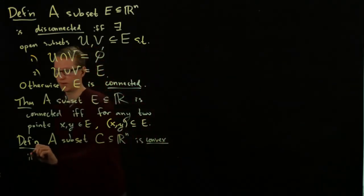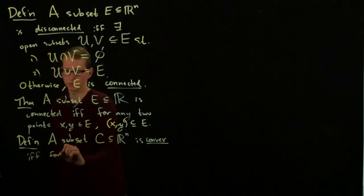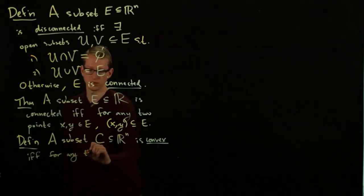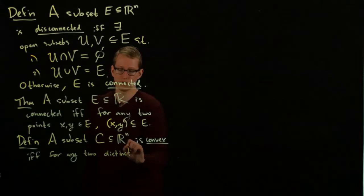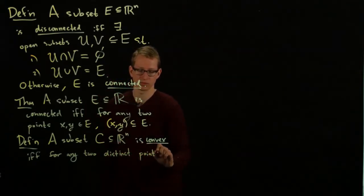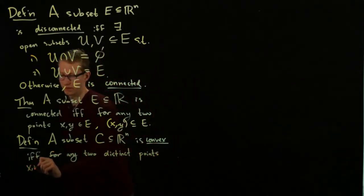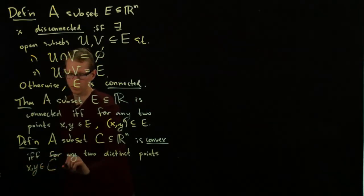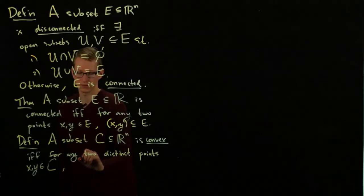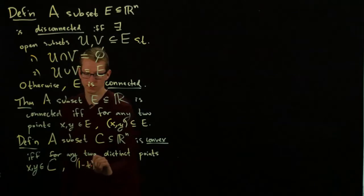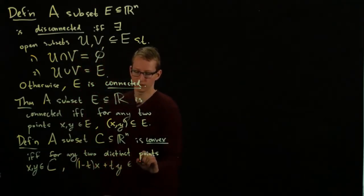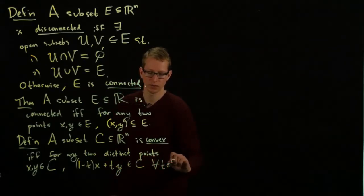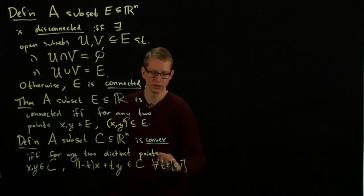if and only if for any two distinct points X and Y in C, the line, the set of all points of the form (1-T)X + TY, is contained in C for all T between 0 and 1, including its endpoints.